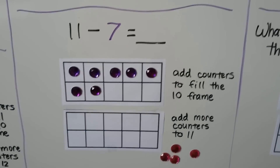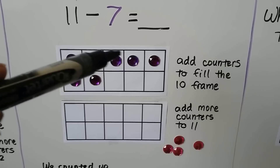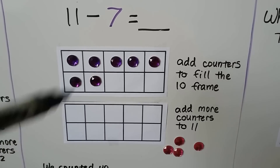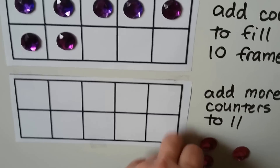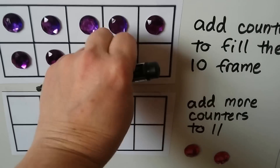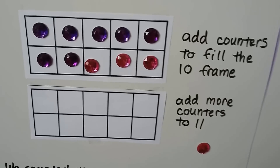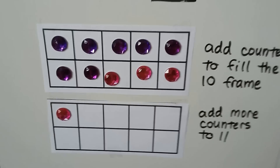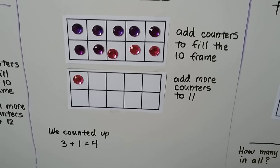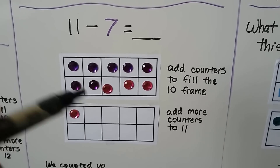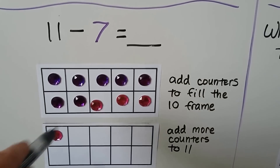We'll try it again: 11 minus seven. We start with seven counters: one through seven. We add counters to fill the 10 frame to make a 10 — three more, now we have 10. We add more counters to get to 11. We counted up three and one more — 3 plus 1 is 4. We added 4 to make 11, so 11 minus 7 is equal to 4.